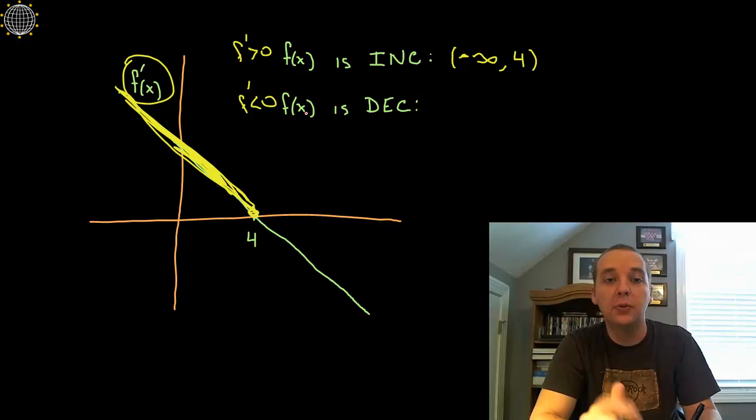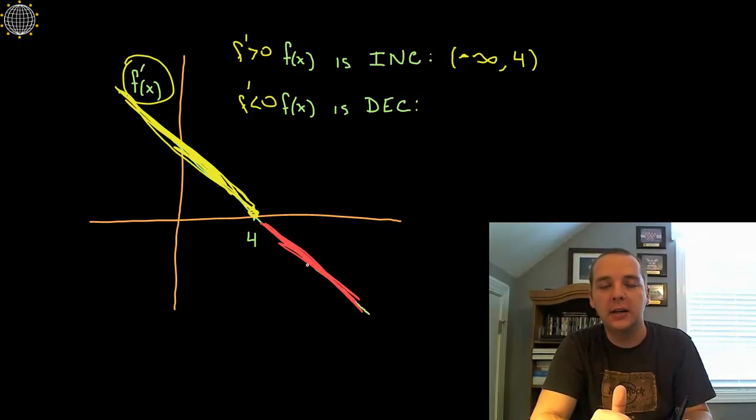And let's see here, let's do the next one in red. Where is the original function decreasing? Well look here below the x-axis is where the derivatives are below the x-axis, the derivatives are negative indicating the original function is decreasing there, so that's from 4 to infinity.